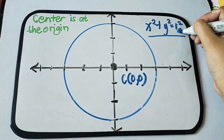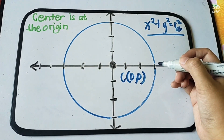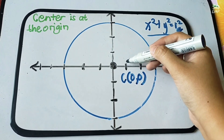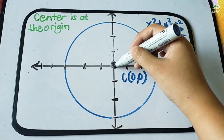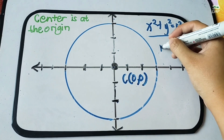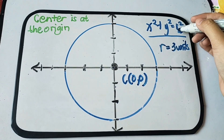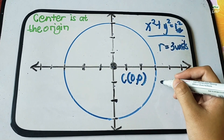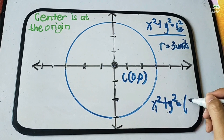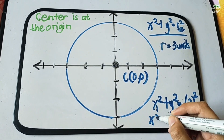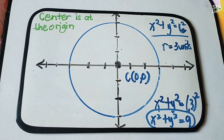Now let's find the radius of this circle at the origin. Counting from the center to the edge: 1, 2, 3 — the radius equals 3 units. Substituting: x squared plus y squared equals 3 squared. What is 3 squared? We have x squared plus y squared equals 9. This is your standard form.